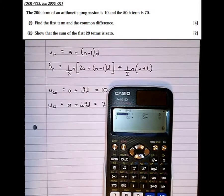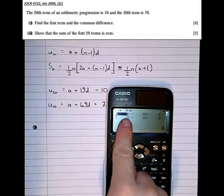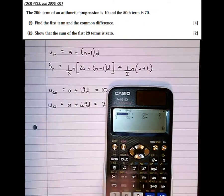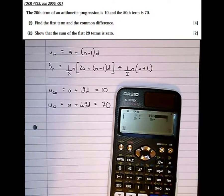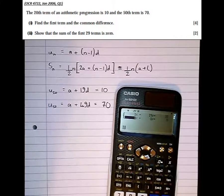So in this particular question, I'm going to make my a the x variable, and the d the y variable. So 1a, 19d is 10. 1a, 49d is 70.